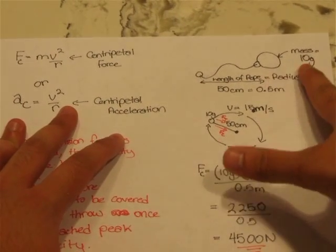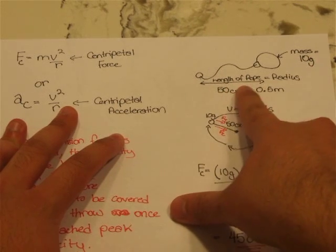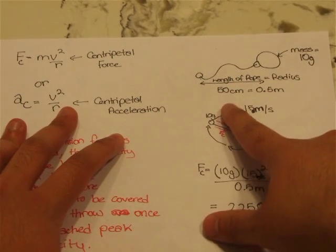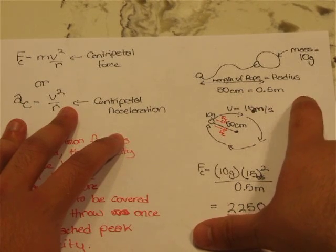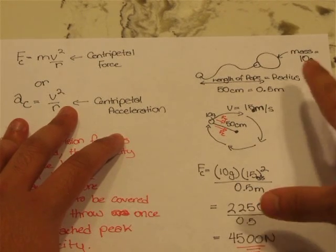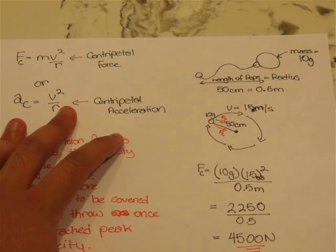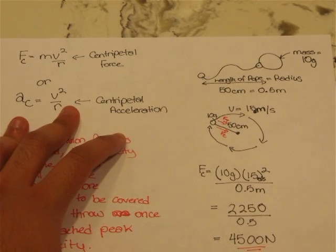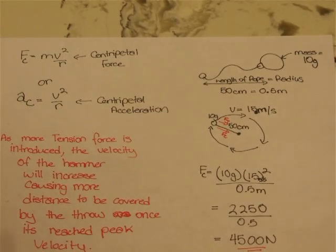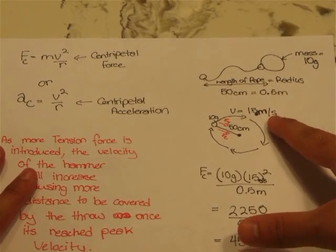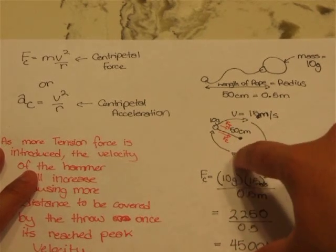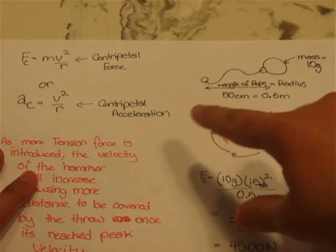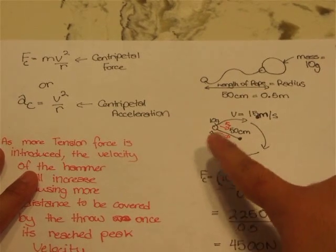Here's my ball with a mass of 10 grams. The length of the rope, as I demonstrated, equals radius. The length of the rope I chose is 50 centimeters, which equals 0.5 meters. The velocity I put as 15 meters per second. This is my diagram—you can see force tension and force centripetal going towards the center of the circle, and my ball is right here.